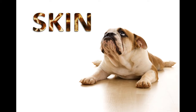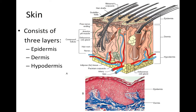Let's talk about skin. When we're talking about the skin, we're generally talking about three layers: the epidermis, dermis, and hypodermis. This diagram identifies all three. The hypodermis is mostly fat and vasculature, and it also has some lymph vessels in it as well.